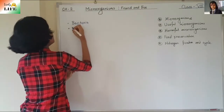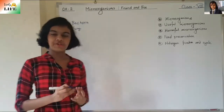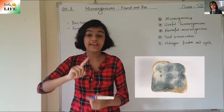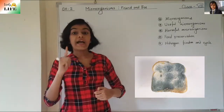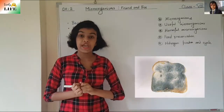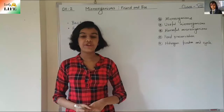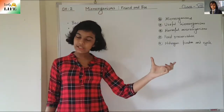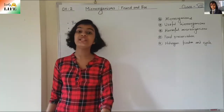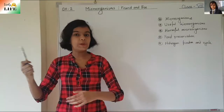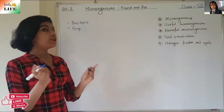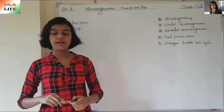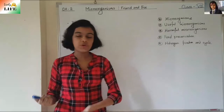Fungi are another type of microorganism. If you keep bread in a moist place, after some days you will see bread mold growing on it — that is a type of fungi. Yeast is also a type of fungi. Fungi can be unicellular, meaning single-celled, like yeast, or multicellular, made of many cells, like bread mold. Other examples include Aspergillus and Penicillium.